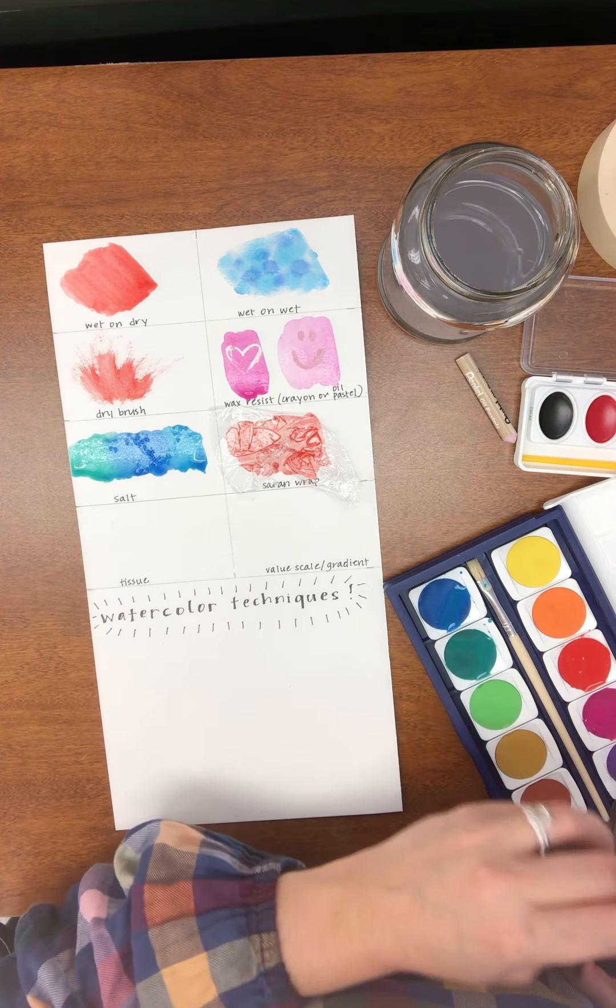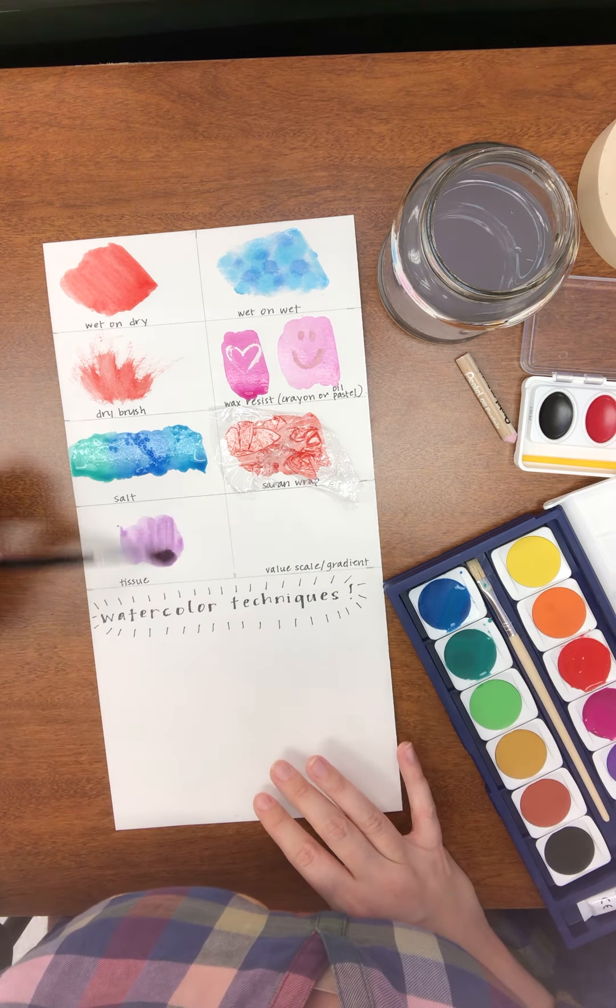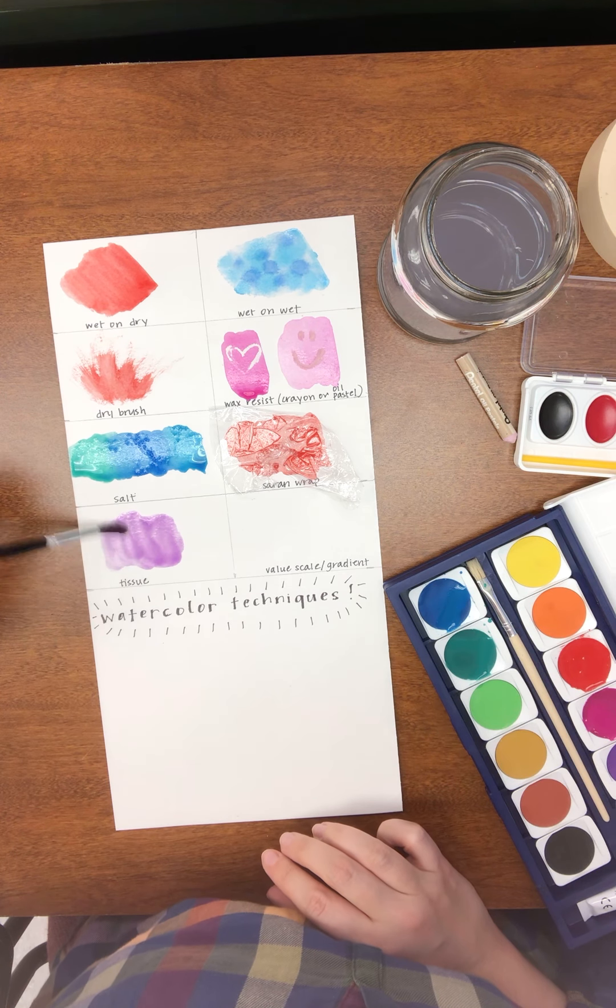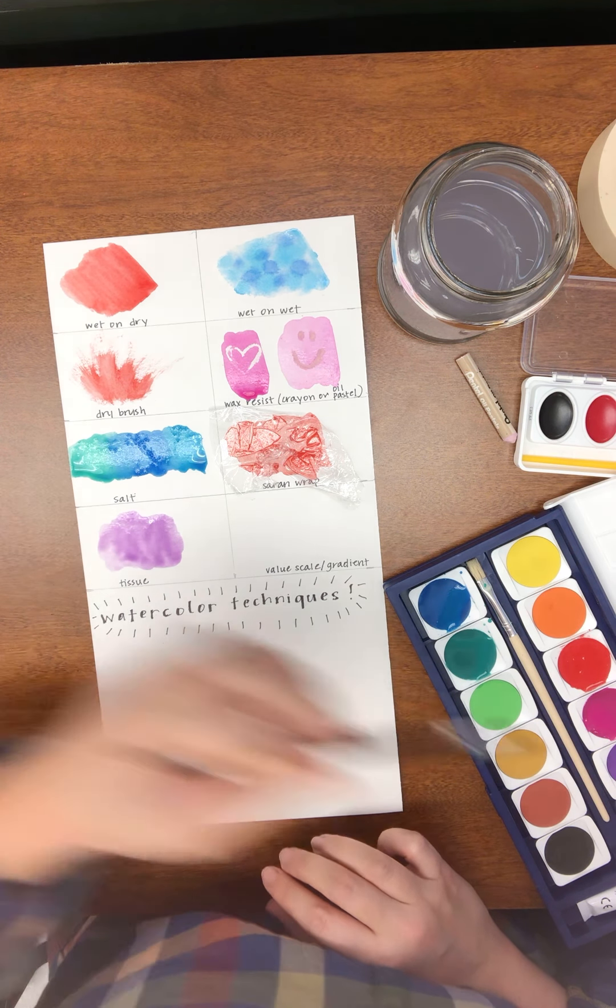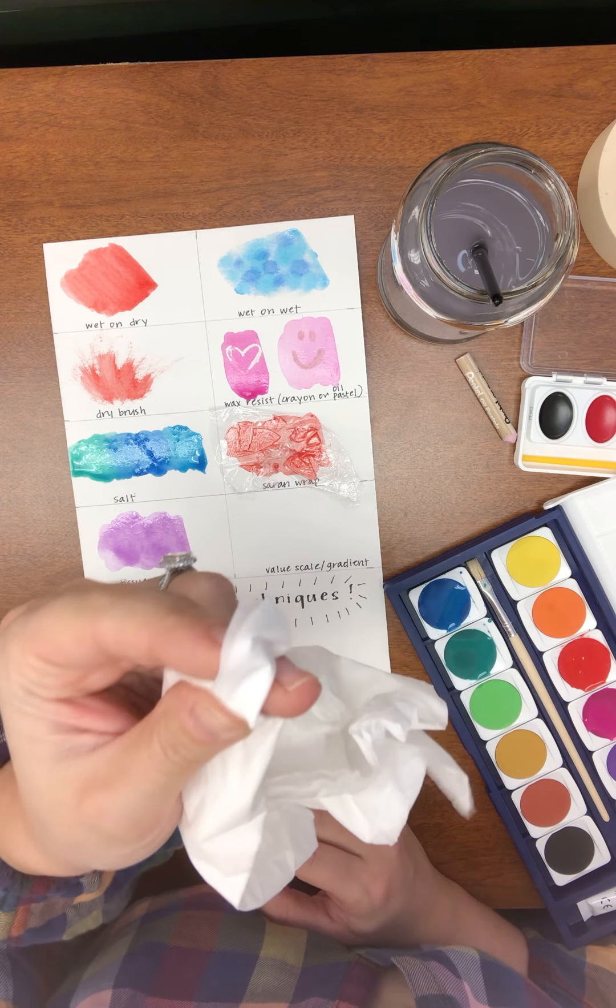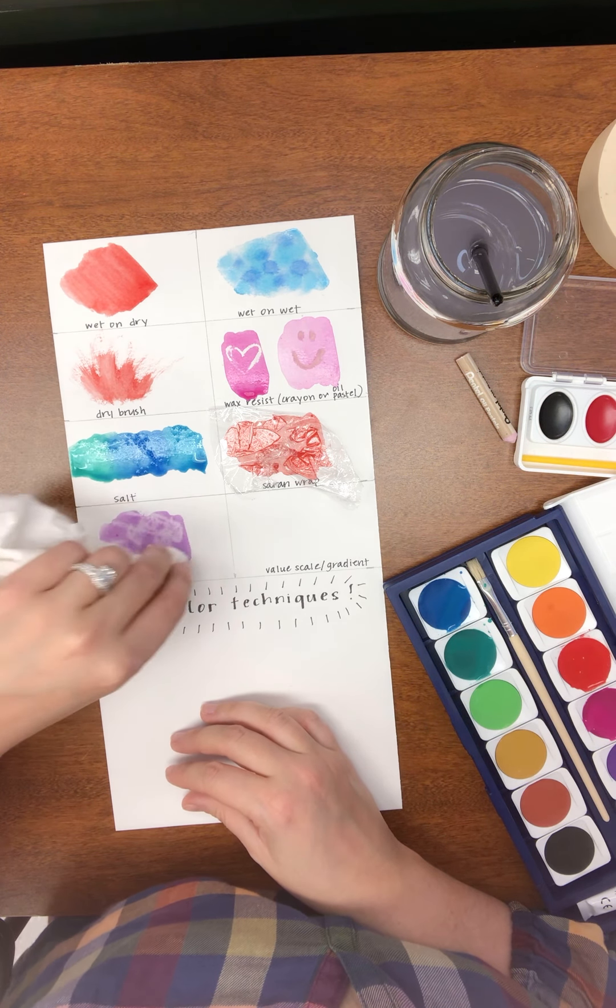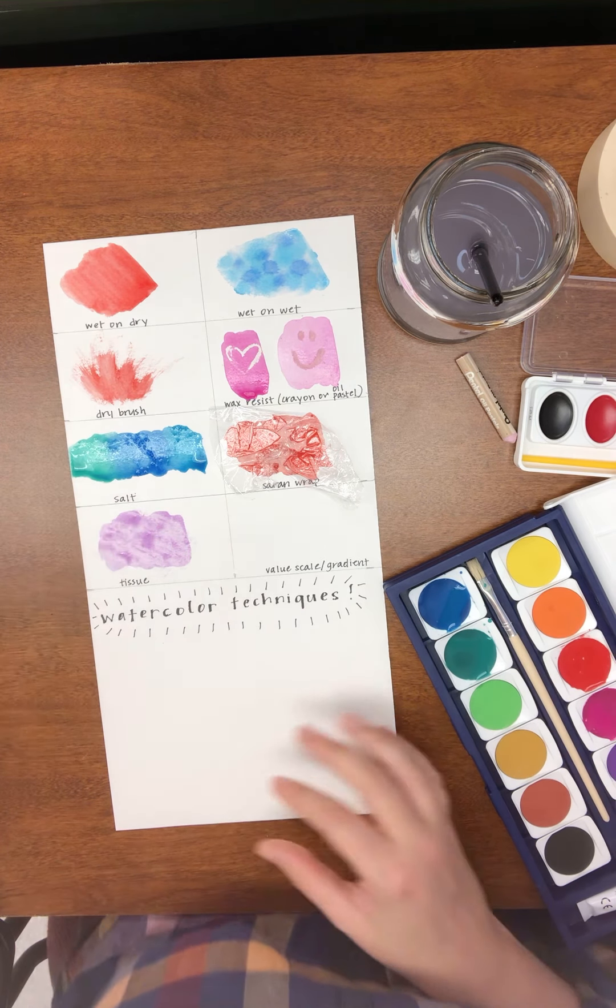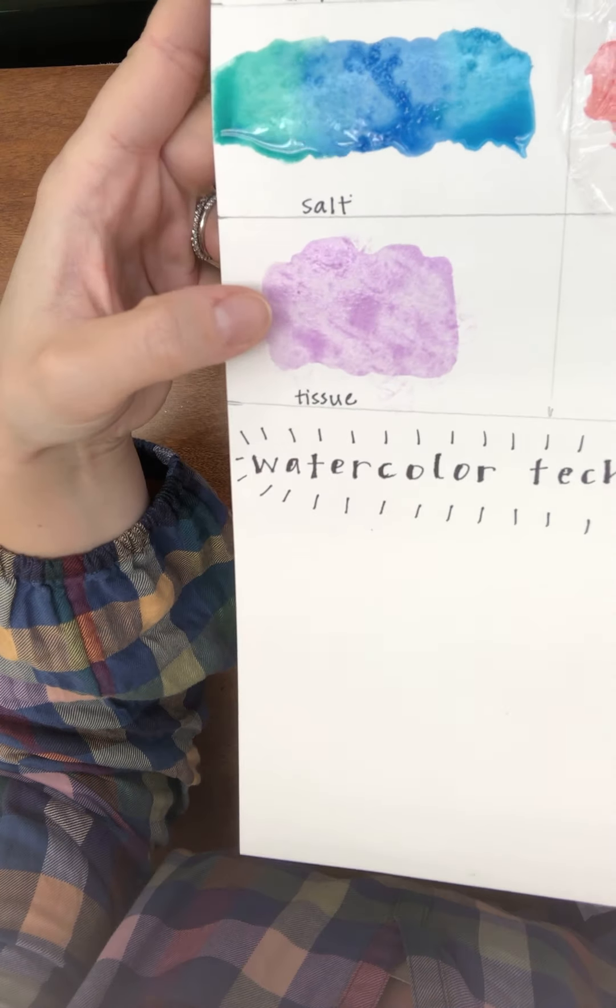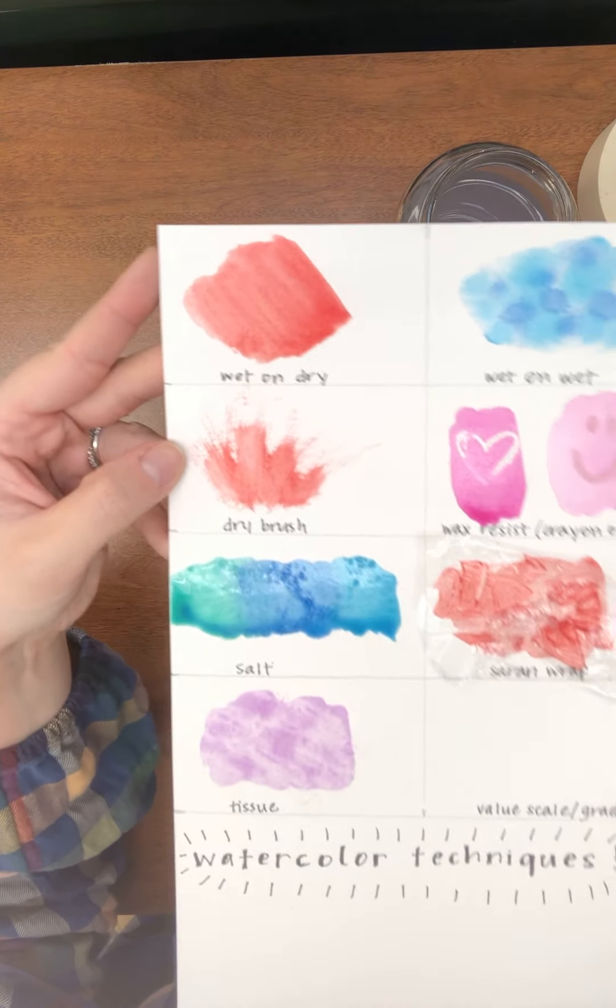My next technique has to do with tissues. I'm going to take some purple. You can use whatever colors you want. And now what I'm going to do is show you guys how you can use the tissue to absorb some of the moisture that's in the paint. And it does leave behind a really beautiful texture that almost looks like tie dye. So I've taken away some of the pigment and some of the moisture with the tissue. So you can start to see how some of my other techniques are drying as well.